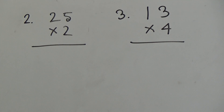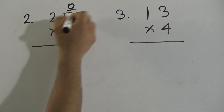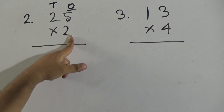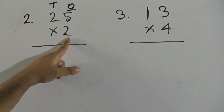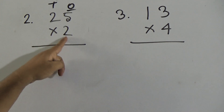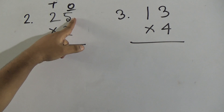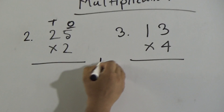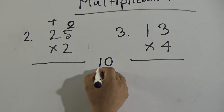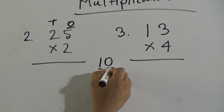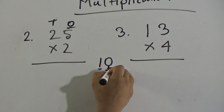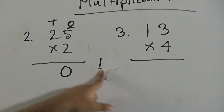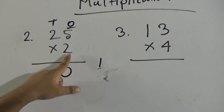Similarly, we shall solve the next multiplication. Here 5 is in the ones place and 2 is in the tens place. We multiply this 5 by 2 first. Counting times table 2: 2 ones are 2, 2 twos are 4, 2 threes are 6, 2 fours are 8, and 2 fives are 10. Now 10 has two places — ones place and tens place. So from 10, I write 0 here and carry the 1.